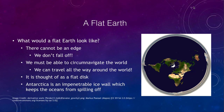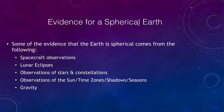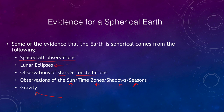Now let's look at some of the evidence for a spherical Earth. This is not every possible example — I just wanted to go over several different things we could look at for the fact that the Earth is spherical. We can look at observations from spacecraft, lunar eclipses, observations of the stars and constellations, and some other observations involving the sun, time zones, shadows of the sun, and seasons. Finally we can look at gravity. There are many more, but I simply want to look at some of these and give an understanding of them.